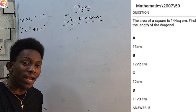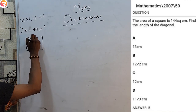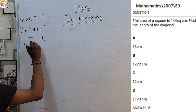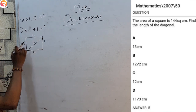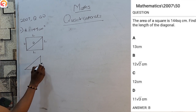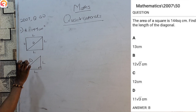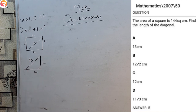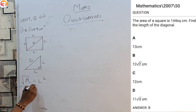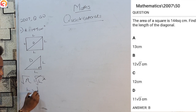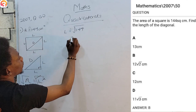Since I know the area, I will recall that area equals length squared. To find the length, I take the square root of both sides: length equals the square root of the area. The area is 144, and the square root of 144 is 12 centimeters. So now I know my length is 12 cm. Therefore I can apply Pythagoras' theorem: the square of the hypotenuse (the diagonal) of this right-angled triangle equals the square of one side plus the square of the other side.